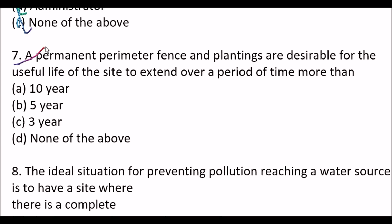Next question: a permanent perimeter fence and planting are desirable for the useful life of the site to extend over a period of more than — option A, 10 years; option B, 5 years; option C, 3 years; option D, none of the above. Right answer is option B, 5 years.